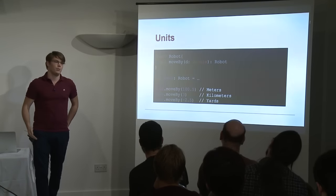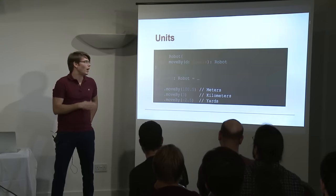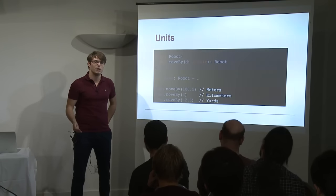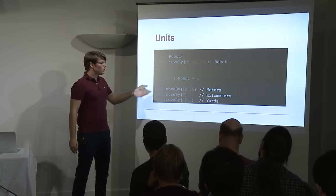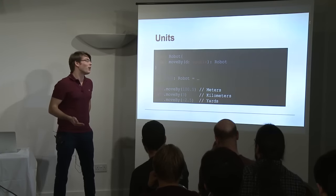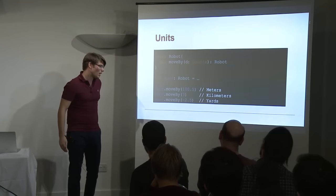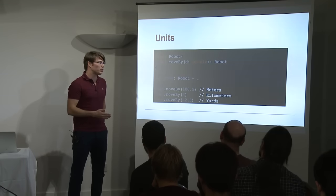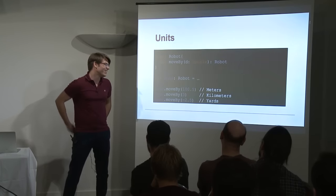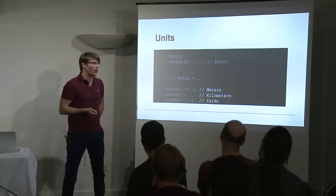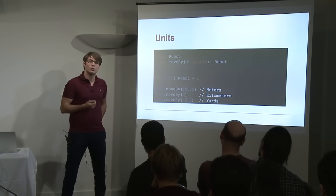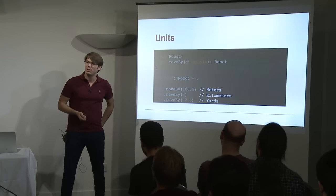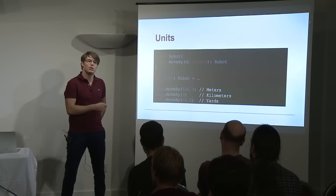Now let's try to see some useful applications. Let's imagine we have a class Robot with some direction and a function move_by, which takes a distance in double. We create our robot — let's call it Nono — and we want to move Nono by 100.5 meters. In some other part of our program, someone wants to move Nono by three kilometers, so they put three. And maybe somewhere else they use yards. Basically the only way to know the unit of your double is to look at the documentation, which is very brittle and it's very easy to make mistakes.